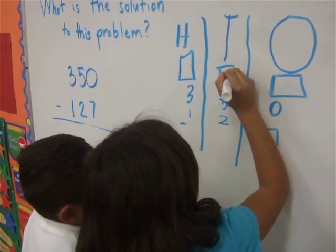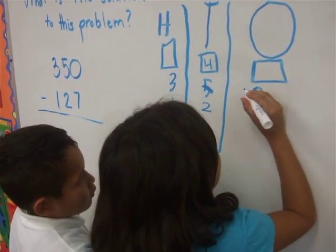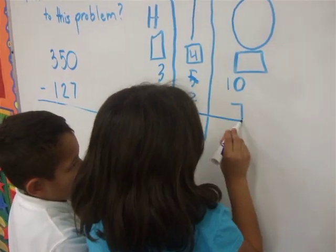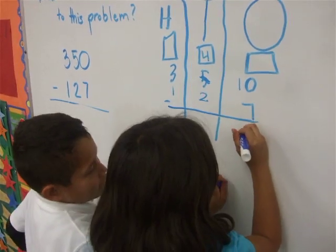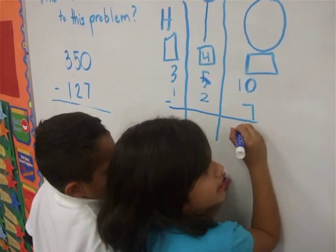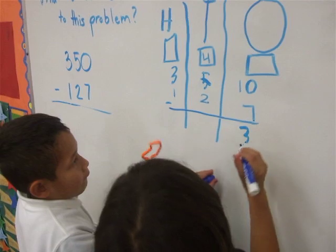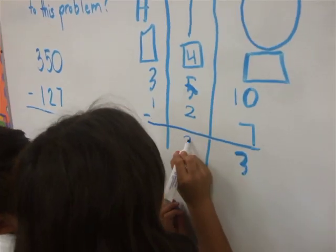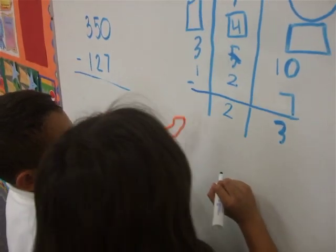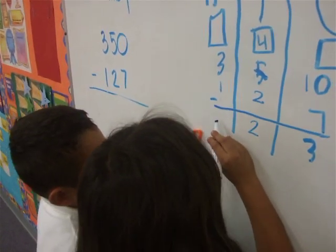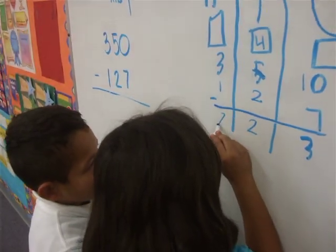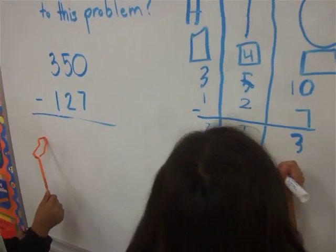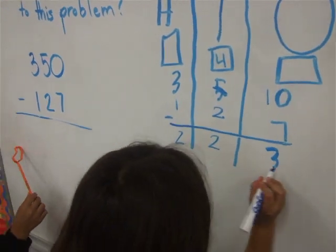The five becomes a four. The zero becomes a ten. Ten minus seven equals three. Four minus two equals two. Three minus one equals two. And the difference is two hundred twenty three.